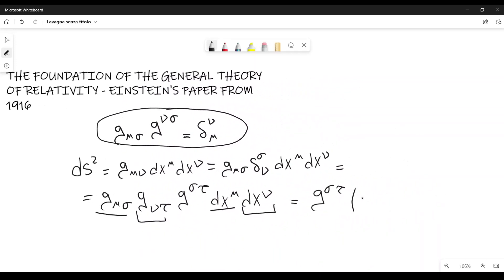here I can rewrite this as g mu sigma times dx mu, which multiplies g mu sigma tau times g mu, but the product of two tensors gives me a tensor.